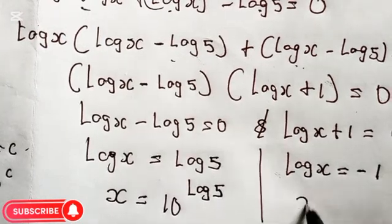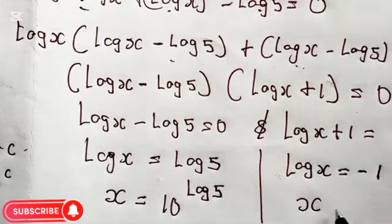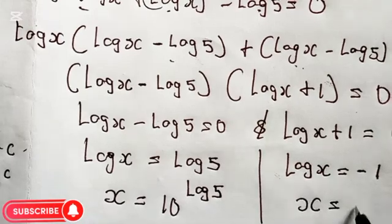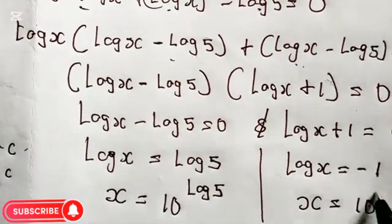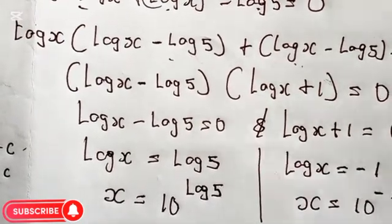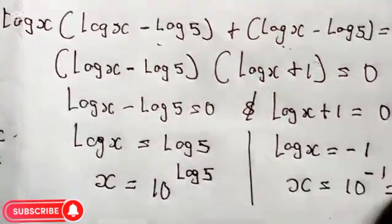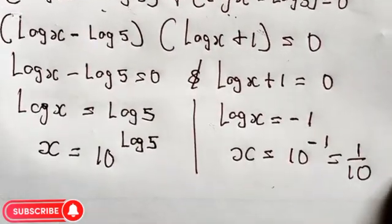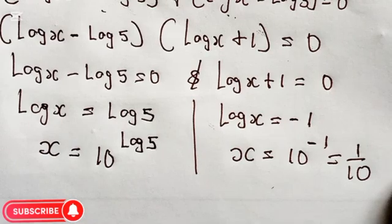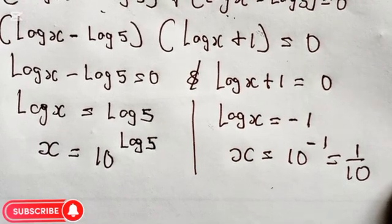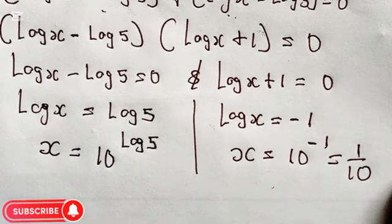For Case 2, collecting like terms gives log x equals negative 1. Using the logarithm-to-exponential conversion, we get x equals 10 raised to the power of negative 1, which is 1 over 10. So our two values for x are x equals 5 and x equals 1/10.